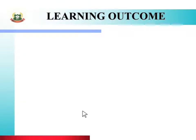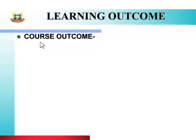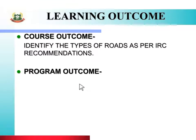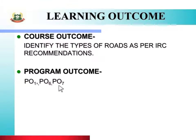Learning outcome for this practical includes course outcome, program outcome, and practical outcome. Course outcome: identify the types of roads as per IRC recommendations. यह प्रैक्टिकल ड्रॉ करने के बाद, आप IRC recommendations के हिसाब से रोड के types पहचान सकते हो. Program outcome includes PO1, PO6, and PO7.